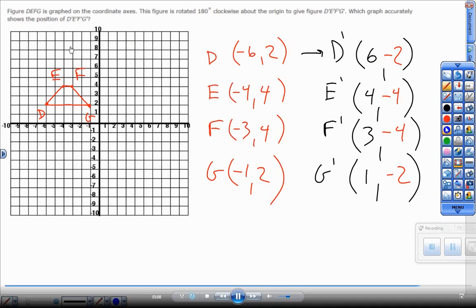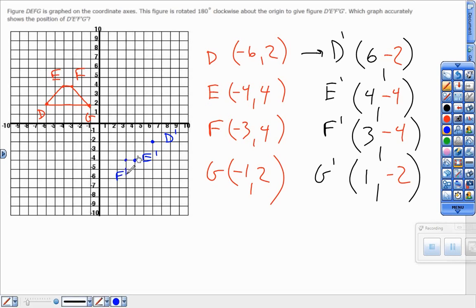It's 6 negative 2. If I could delete this... 6, negative 2, right 6, down 2, that's the new D prime. Right 4, down 4 is the new E prime. Right 3, down 4 is the new F prime. And then right 1, down 2 is the new G prime.